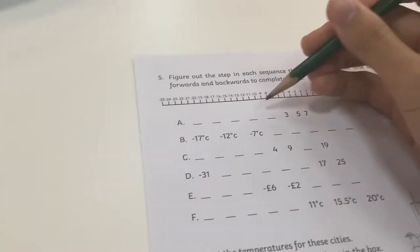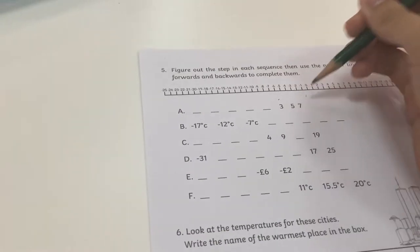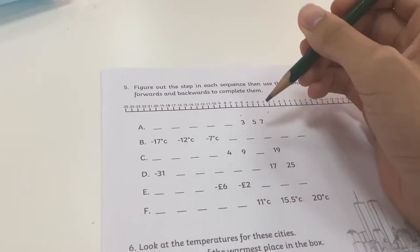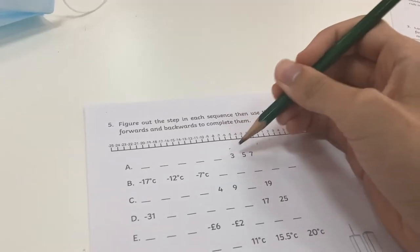Now I have sequences of numbers. So here it goes up by 2. And the number line starts this time. And here, it will be 3, 5, 7.